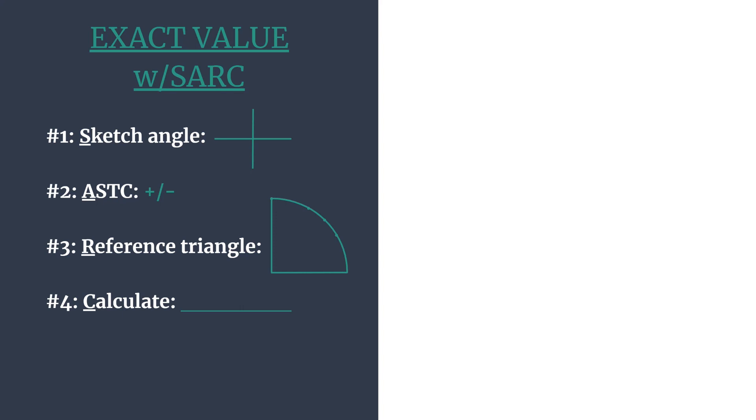We'll get more into that as we actually work this example, but know that our end goal here is to decide if our final answer is positive or negative so that we can eliminate all of that consideration for the rest of the problem. The R stands for reference triangle, so we'll find a reference angle then the special right triangle and coordinates that go with that. And then the C is for calculate, so we'll use the coordinates to calculate the trig ratio that we want.